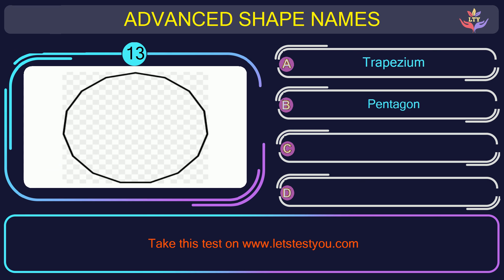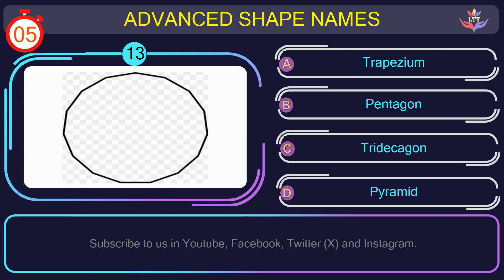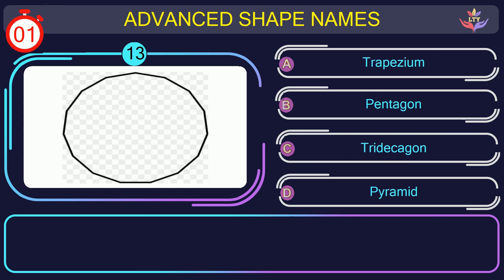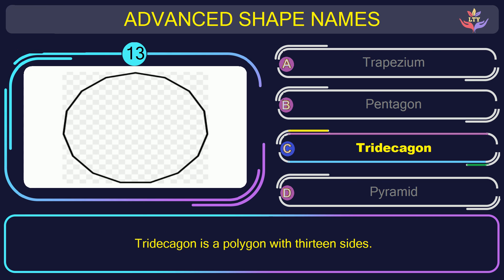Question number thirteen. Find the name of the shape in this picture. The correct answer is option C. Hendecagon. Hendecagon is a polygon with thirteen sides.